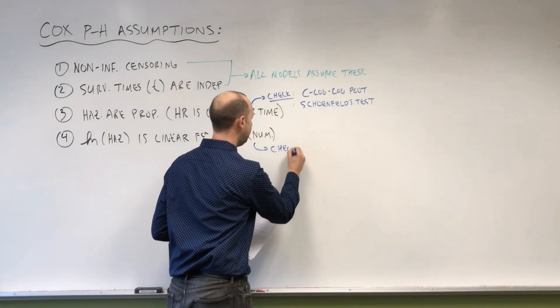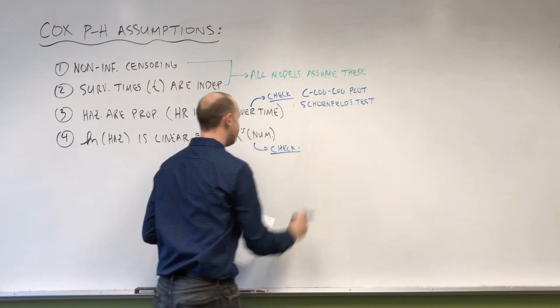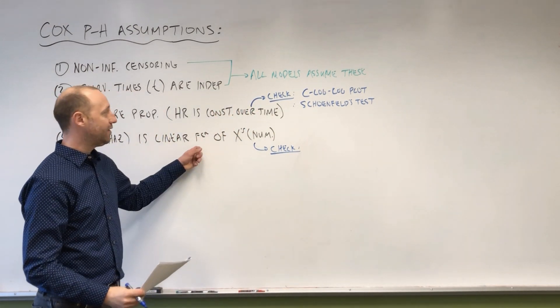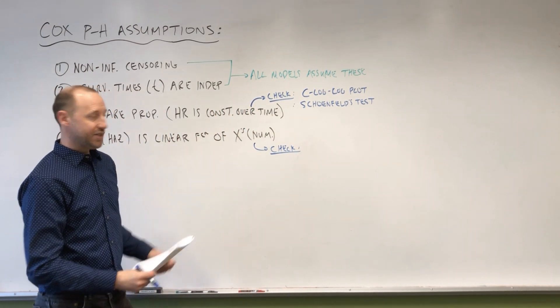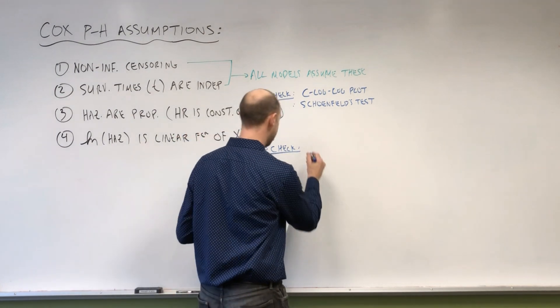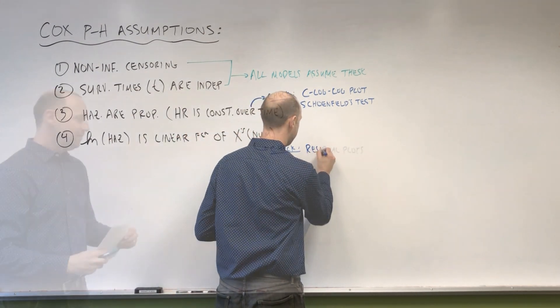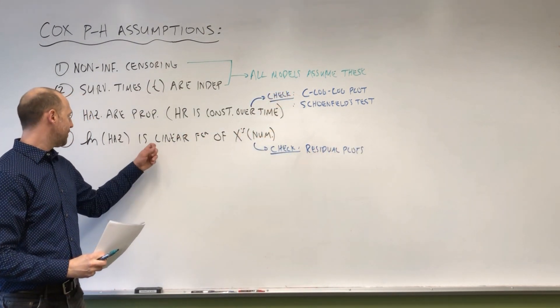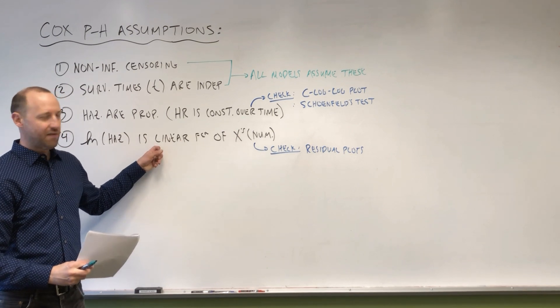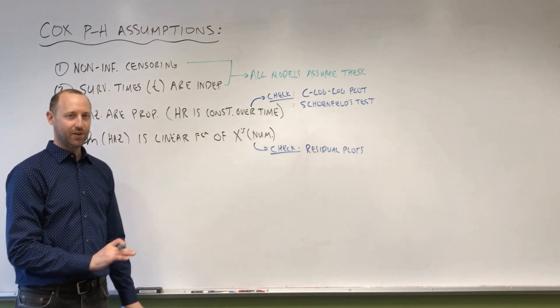This we can check in a very similar way that we check linearity for linear regression as well as Poisson regression. We can look at residual plots. And the residuals for survival analysis are a little bit different than they were in linear regression, but conceptually it's the same idea.